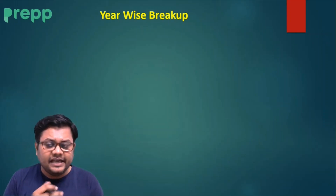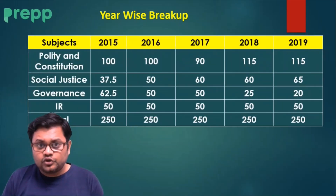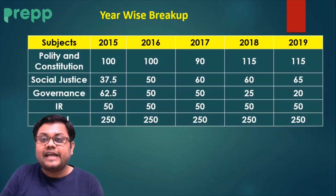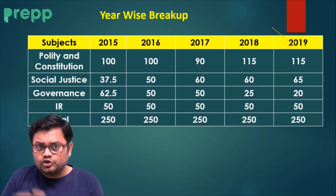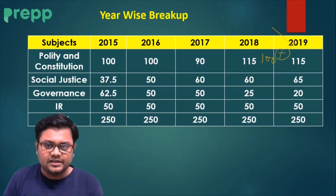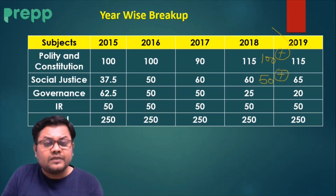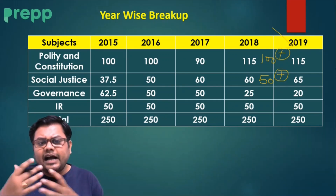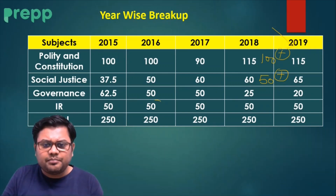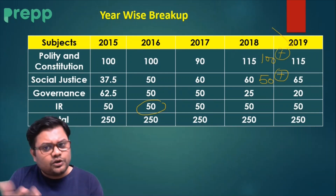Before moving forward, let's look at the Year-wise Breakup — how many marks of questions have been asked from each section. Friends, if we talk about 2015 to 2019, the Polity section is the most important with 100+ marks of questions. Social Justice has 50+ marks, Governance has around 20-30 marks, and IR has a constant 50 marks every year.